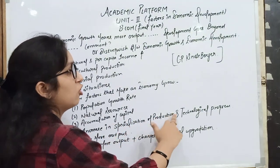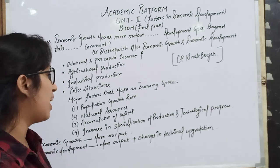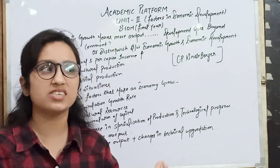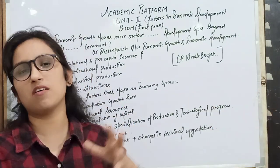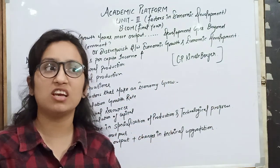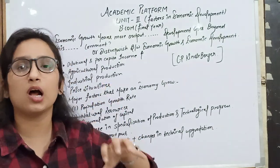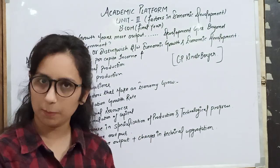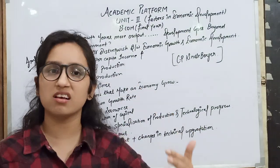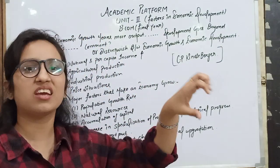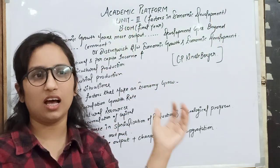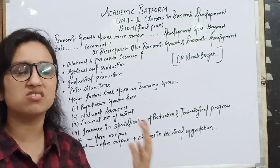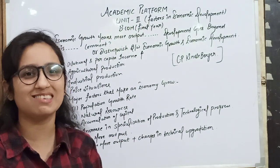Similarly, increase in specialization of production and technical progress — we need a lot of attention on research and development. Because of research and development, we will move on to innovations and creativity, good sophisticated machines, and high-tech machines which will reduce our cost and increase our production capacity. It is necessary to focus on technological progress rather than using hand-loom techniques and outdated technologies. We should use high-tech, sophisticated machines and conduct proper research and development programs so that we can upgrade.